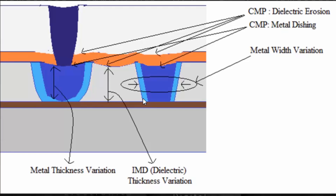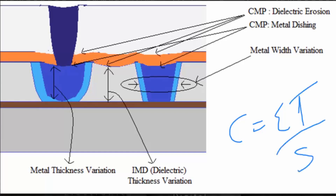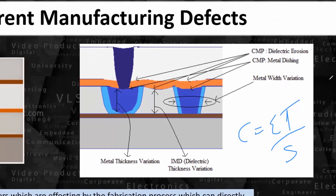If I ask you to calculate the capacitance, you might use C = εA/d, but that formula is not going to help much here. Even if I write it as C = ε × thickness / s, we cannot apply this formula straightforwardly, because even if I assume the thickness area is constant, I cannot say that s is constant. So the simple parallel-plate capacitance formula breaks down completely.